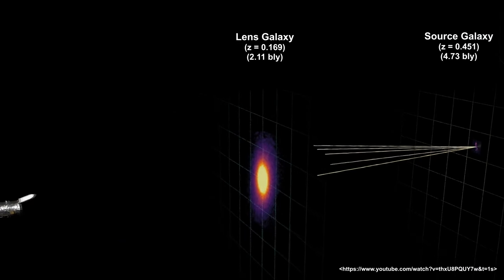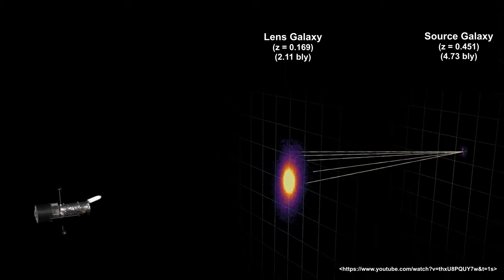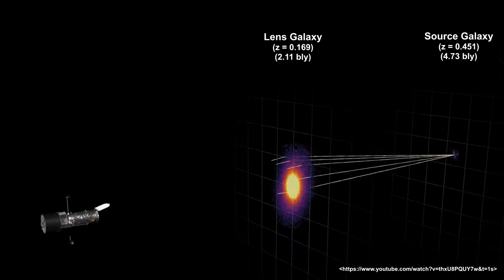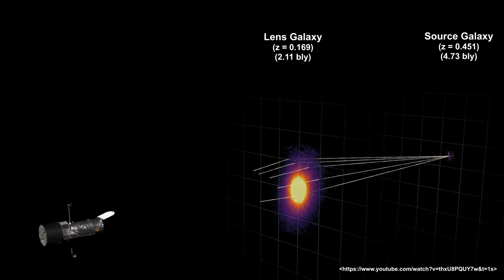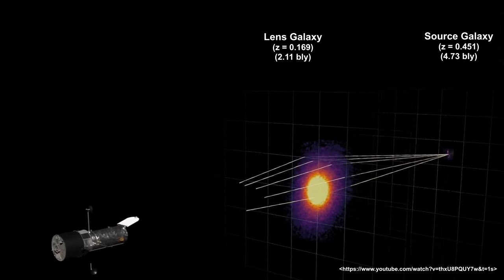We start with the distant galaxy, 4.7 billion light years away. The light from this object passes through the galaxy Abel 1201, 2.1 billion light years away.